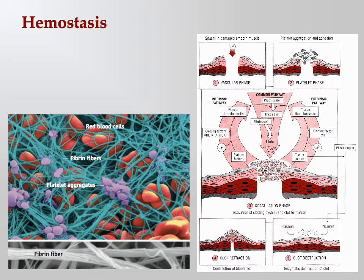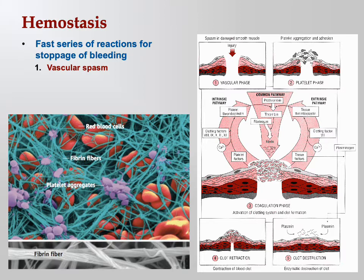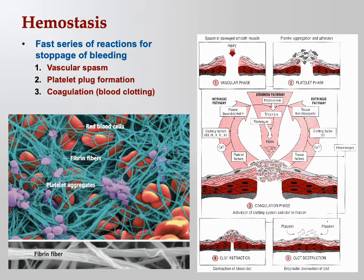Now let's talk about hemostasis — don't confuse this with homeostasis. 'Hemo' means blood and 'stasis' means to stay the same, so hemostasis means maintaining a constant state of the blood. It's a fast series of reactions to stop bleeding, consisting of three basic steps: first, vascular spasm — the injured blood vessel constricts; second, platelet plug formation — the temporary plug to stop bleeding; and third, coagulation — the actual formation of the blood clot.